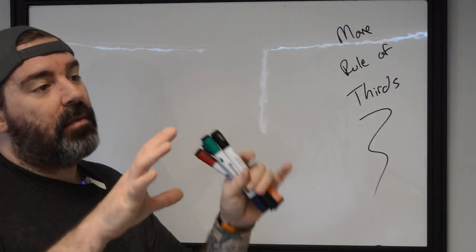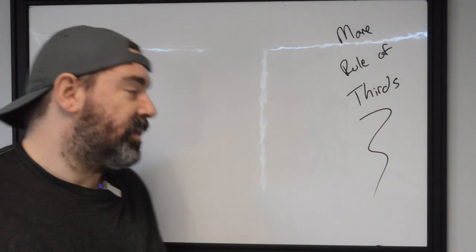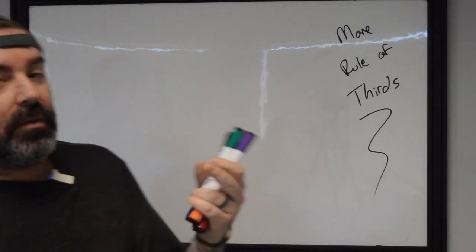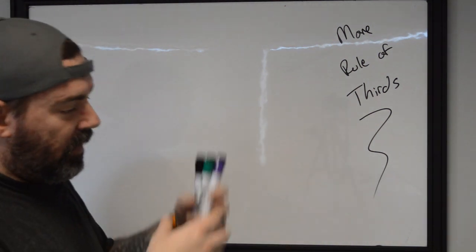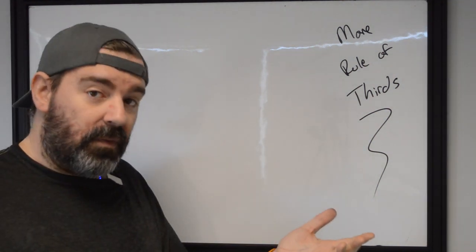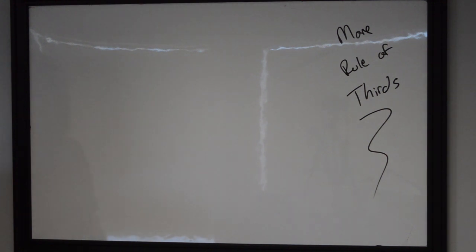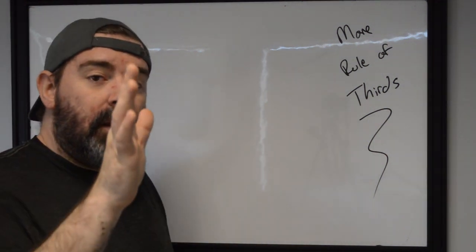So this is thinking about how to mock up stuff on a 2D surface. But when we get into actually doing rule of thirds in tattooing, we're not working with a 2D surface like your tablets or your piece of paper or canvas or whatever. We're working in a 3D space.